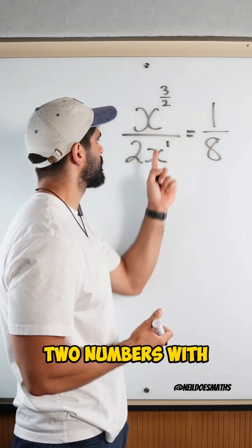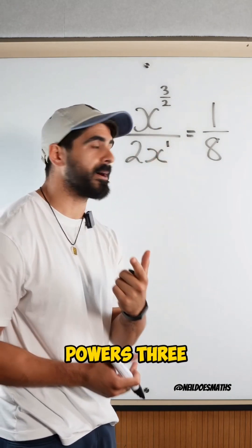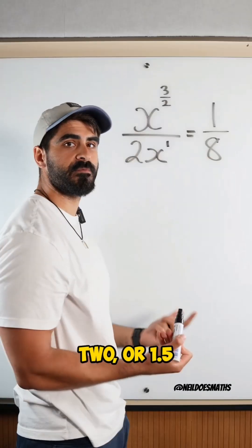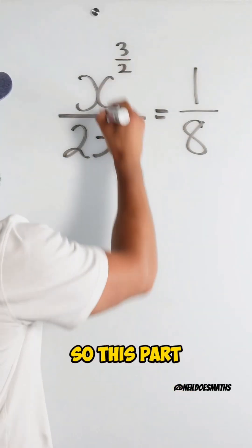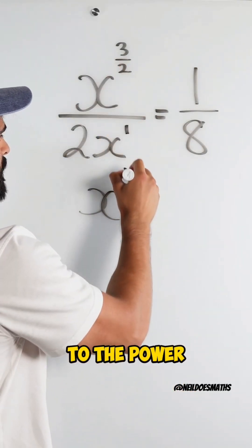So to divide two numbers with the same base, we subtract the powers. 3 over 2, or 1.5, minus 1, is a half. So this part simplifies to x to the power of a half.